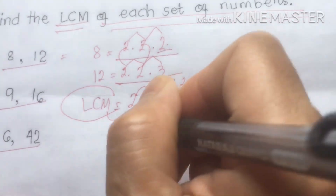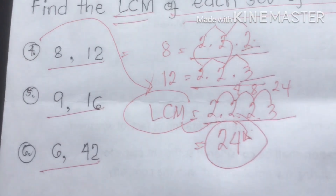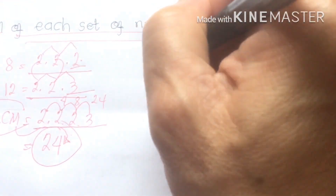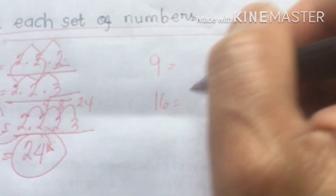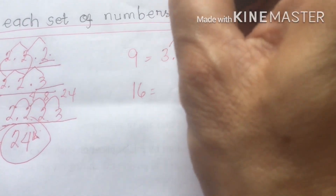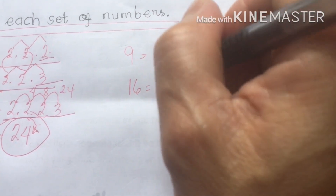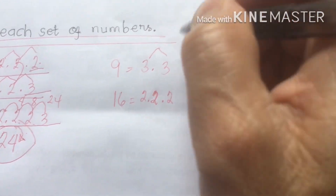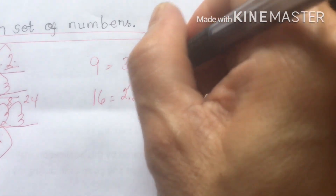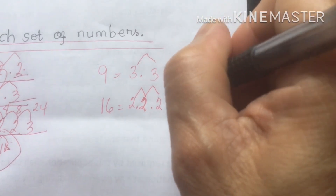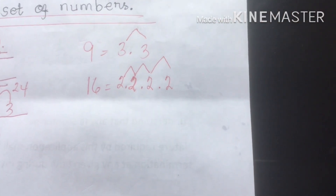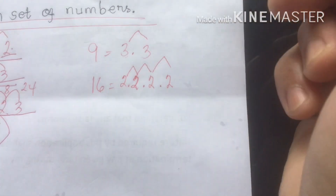Our LCM of 8 and 12 is 24. Next is 9 and 16. For 9: factor is 3 × 3. For 16: 2 × 2 × 2 × 2 — two times two is four, times two is eight, times two is sixteen.